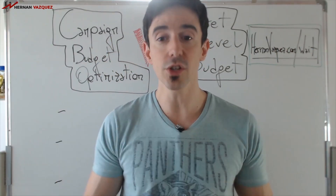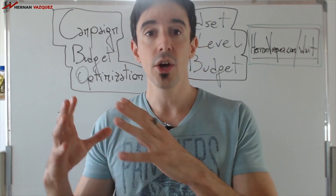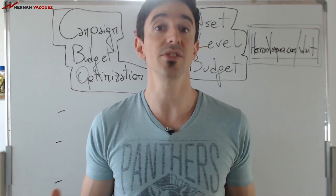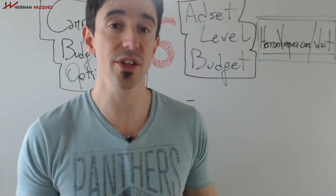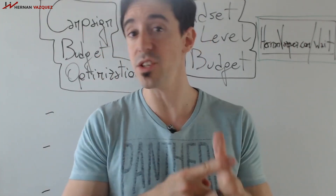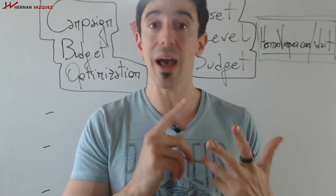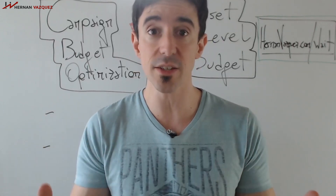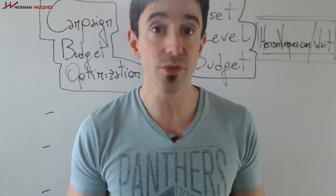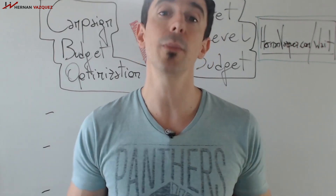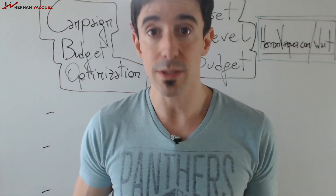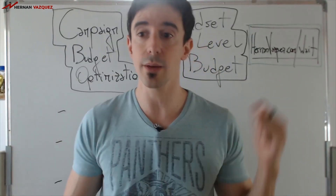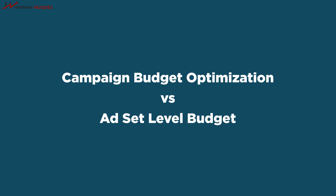When you join the pre-launch, you will be able to get your questions answered. We're going to be touching base on three main networks: number one, Facebook; number two, YouTube and the Google Display Network. I'm going to share with you how to write great ads for Facebook, how to record great videos for Facebook and YouTube, and how to make great banners for the Google Display Network. So with that being said, let's talk about campaign budget optimization versus ad set level budget.